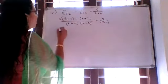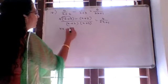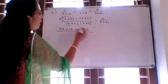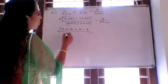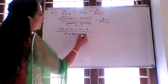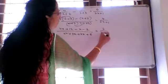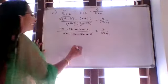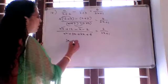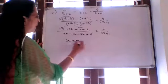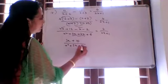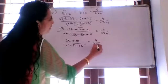Expanding the brackets: 4x plus 12 minus x minus 2, over x squared plus 5x plus 6, equals 4 divided by 2x plus 1. Simplifying the numerator: 4x minus x is 3x, and 12 minus 2 is 10. So it becomes 3x plus 10 over x squared plus 5x plus 6 equals 4 divided by 2x plus 1.